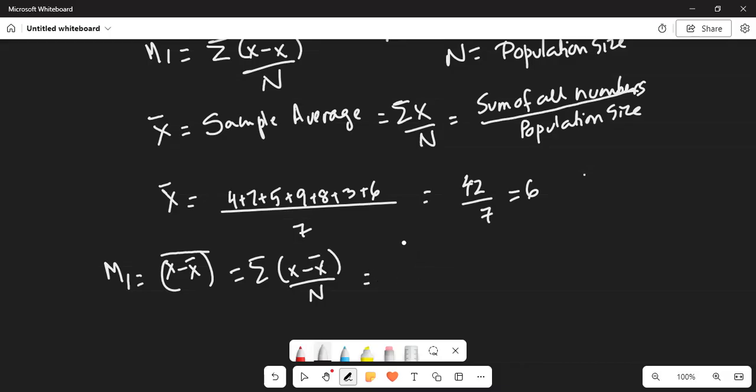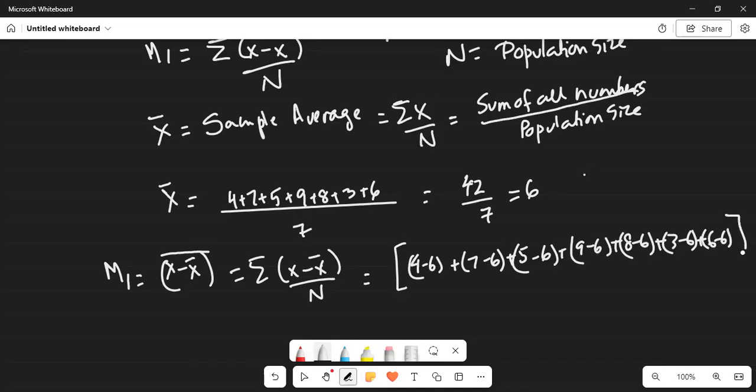Is sum of x minus x-bar over N. So this is equal to, in parenthesis, deviation of each number from the mean, average of that. So 4 minus 6 plus 7 minus 6 plus 5 minus 6 plus 9 minus 6 plus 8 minus 6 plus 3 minus 6 plus 6 minus 6. Whole thing is divided by 7, the population size.